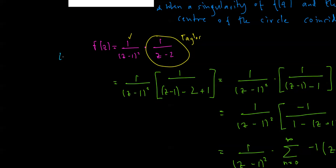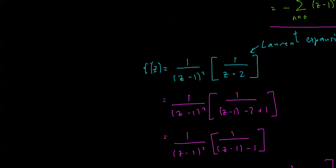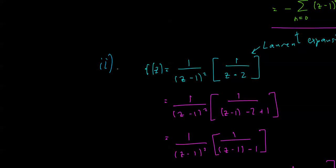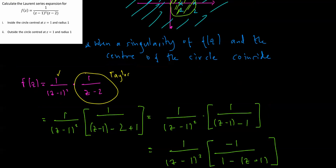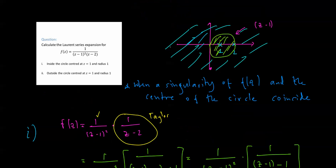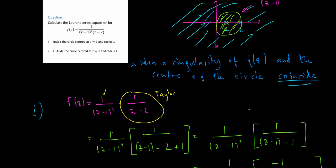So that's part 1 and part 2 — that's how we do these types of questions when a singularity of the function and the center of the circle that we're trying to expand in or out of coincide. This is the technique you need to use. I hope it was a good video, let me know in the comments, and best of luck.